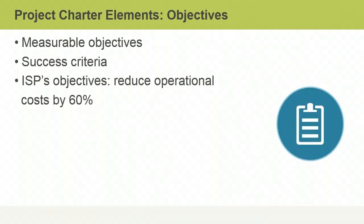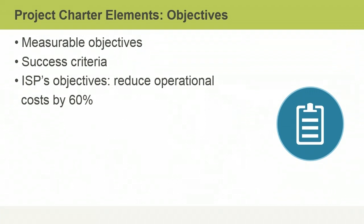The next element the Project Charter should address is the measurable business goals and objectives, and factors that are deemed critical to the success of a project. This criterion is used to measure what must be done for the project to be acceptable to the stakeholders. The Internet Service Provider's measurable objectives, when achieved, will demonstrate the desired strategic plan of reducing operational costs by 60%. The business objectives relate to the strategic initiatives outlined in the business case.